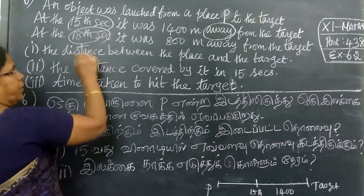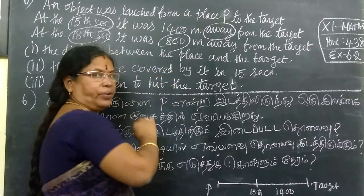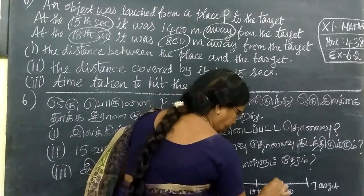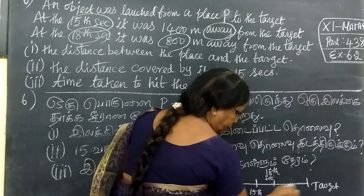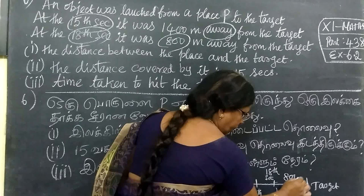After 18 seconds, 800 meters away from the target. This is 18 seconds, the distance is 800 meters.